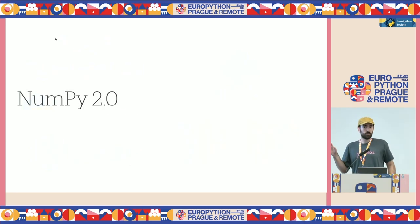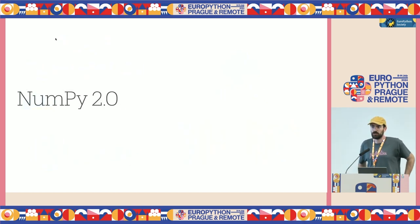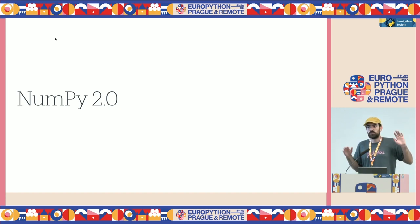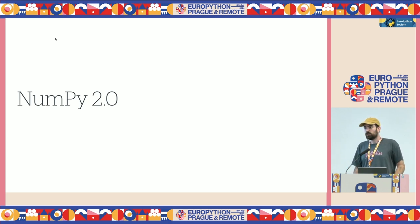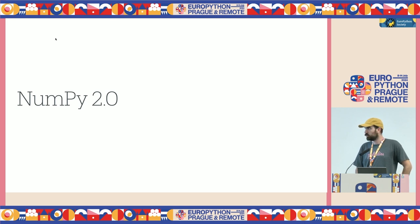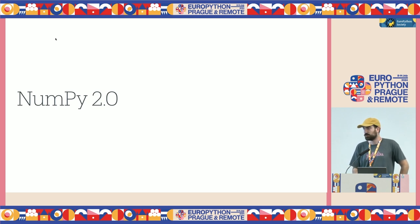NumPy 2.0 was released about a month ago. There are lots of exciting things in it — changes and improvements in the C API, the Python API, and docs improvements. Everything got reworked. With it came deprecations and removals that might break code, but it's an awesome development. It came out about 18 years after NumPy 1, so NumPy 1 is now old enough to drink, and it was time for 2.0.